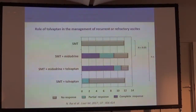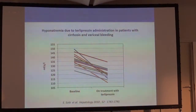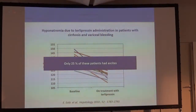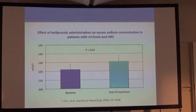That is not the case of Tolvaptan, which is a powerful arterial splanchnic vasoconstrictor. In patients with cirrhosis treated with Tolvaptan for variceal bleeding, Tolvaptan per se may induce hyponatremia because of its effect on the V2 receptor — but this occurs only in patients without ascites. In patients with ascites, when Tolvaptan is used together with albumin, the combination is able to normalize plasma sodium concentration.